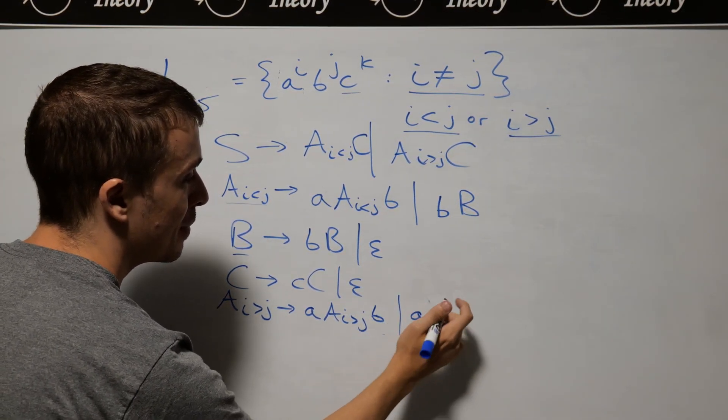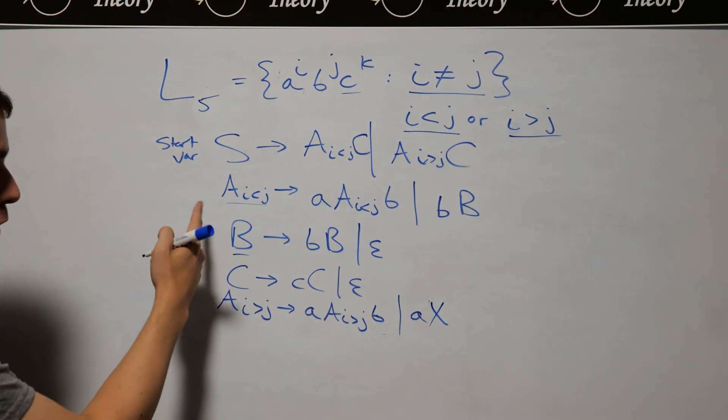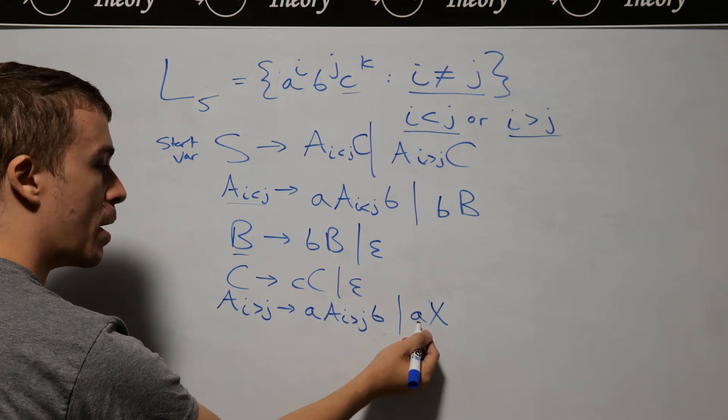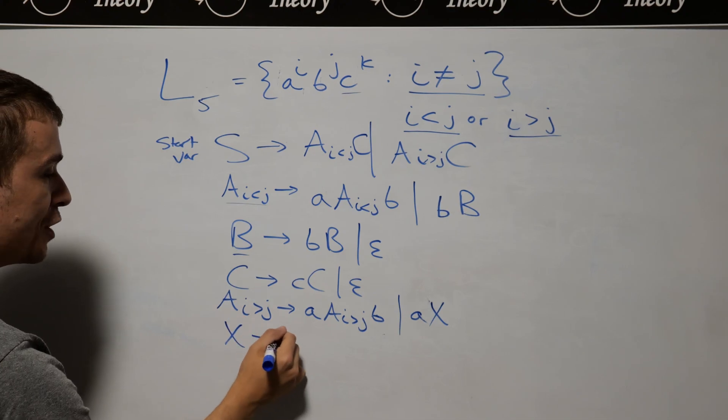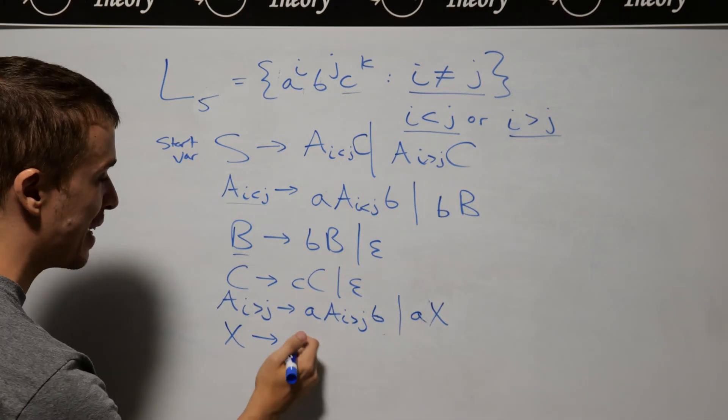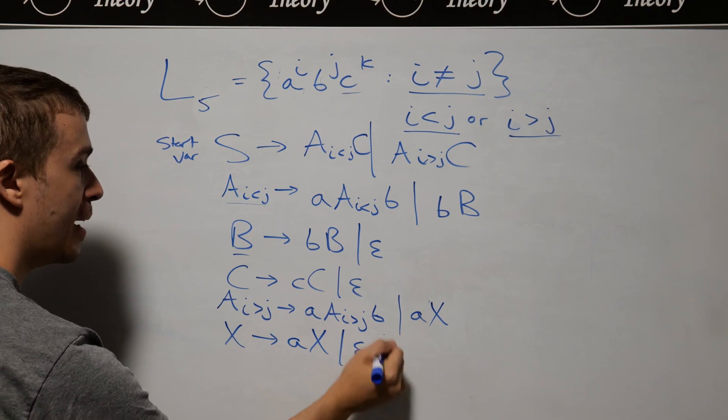The X variable will generate more A's if needed, with rules X → AX or X → ε. Therefore, if the number of A's and B's are not the same,